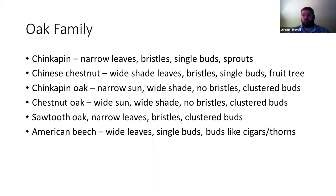Sawtooth oak has very similar leaves — look for clustered terminal buds or the fact that it has acorns with a ton of bristles on the acorn cap. Sawtooth oak also has very dark bark, but so does Chinese chestnut. American beech should be easier to distinguish — look for the cigar or thorn-like, really long zeppelin-shaped pointy buds. So sawtooth oak has clustered buds and that's how you tell it apart from the other three.